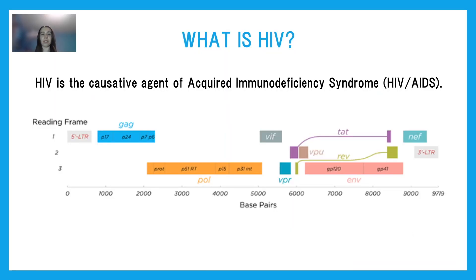So first of all, what is HIV? HIV stands for Human Immunodeficiency Virus, which is a virus that causes HIV AIDS. In 2022, 39 million people had HIV AIDS, and 40 million people have died from the disease. HIV infects the body's immune cells, and when these cells become depleted due to HIV infection, this leaves the individual vulnerable to a variety of opportunistic diseases that a healthy immune system would effectively combat.